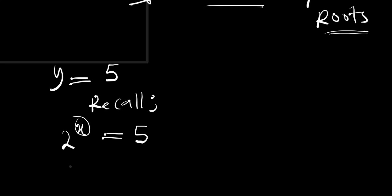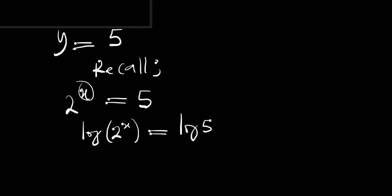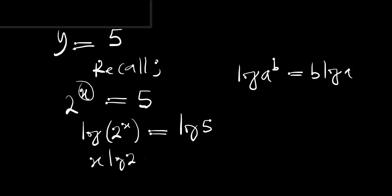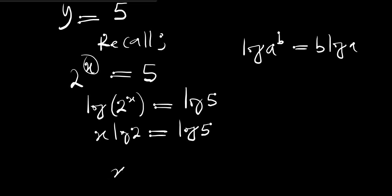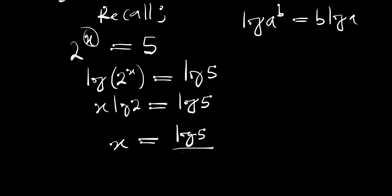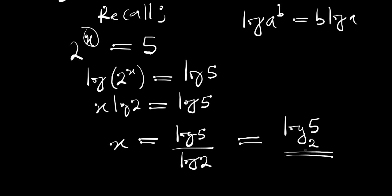To solve 2^x = 5, we take the log of both sides: log(2^x) = log(5). Using the power rule, log(a^b) = b·log(a), we get x·log(2) = log(5). Therefore x = log(5) / log(2), which can also be written as log base 2 of 5.